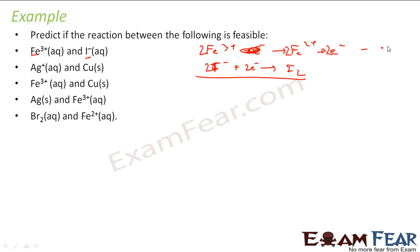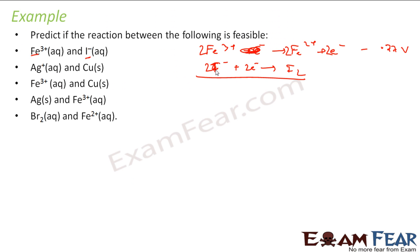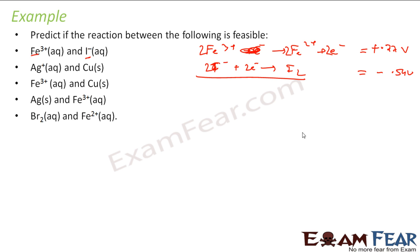For Fe³⁺ to Fe²⁺, the value is 0.77 V. For I₂ to I⁻, the value is 0.54 V, so I⁻ to I₂ will be minus 0.54 V. So this half-reaction is plus 0.77 V and this one is minus 0.54 V.